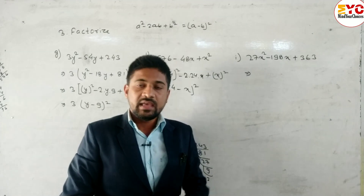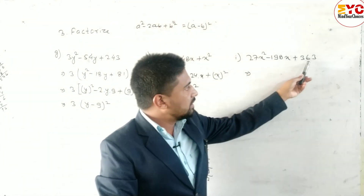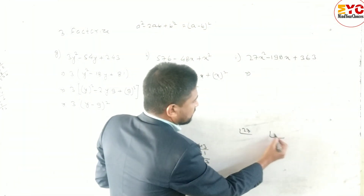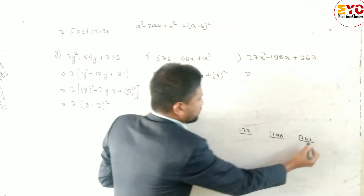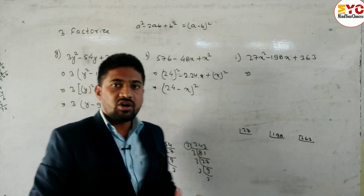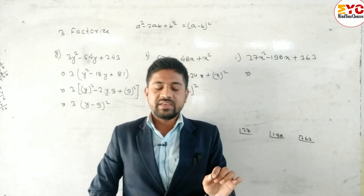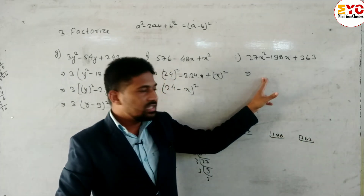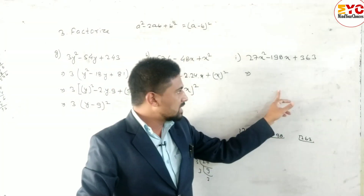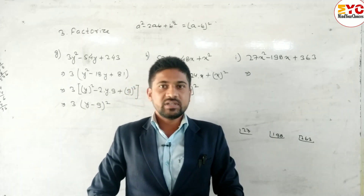For question 3i: 27 - 198x + 363. First we take out the common factor of 27, 198, and 363, then convert into a² and b² form, writing 2ab in the middle. I am going to leave this question — please comment and tell me the answer!